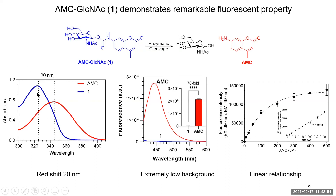After obtaining AMC glucoside (compound 1), we first measured its absorbance to determine the best excitation wavelength. The blue line is compound 1 and the red line is AMC, the chemical released by the enzyme. There is a 20 nanometer red shift between them, which is not a huge overlap, allowing us to safely excite the reaction buffer at 380 nm. In the emission spectra, compound 1 is almost completely inactive, while at 460 nm, the signal intensity of AMC is almost 80-fold stronger than the parent compound. AMC also shows a very good linear relationship between concentration and fluorescence intensity, allowing reliable quantification of enzymatic rates.